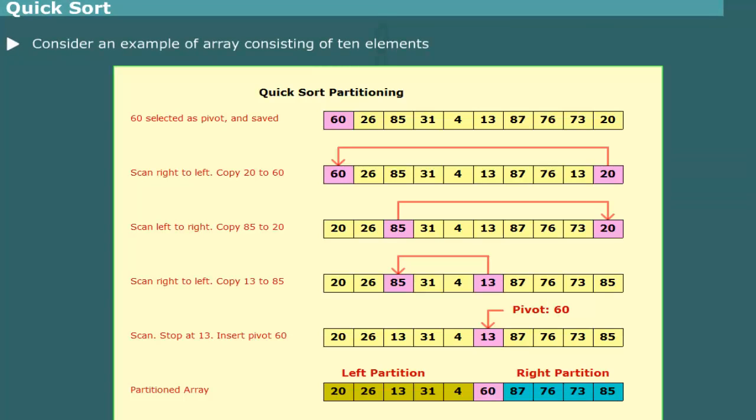Let us consider, for example, the array consisting of 10 elements. To apply QuickSort, we follow the following steps. We select the leftmost element 60 as the pivot. The left and right pointers are set to point to the elements 60, 20, respectively.